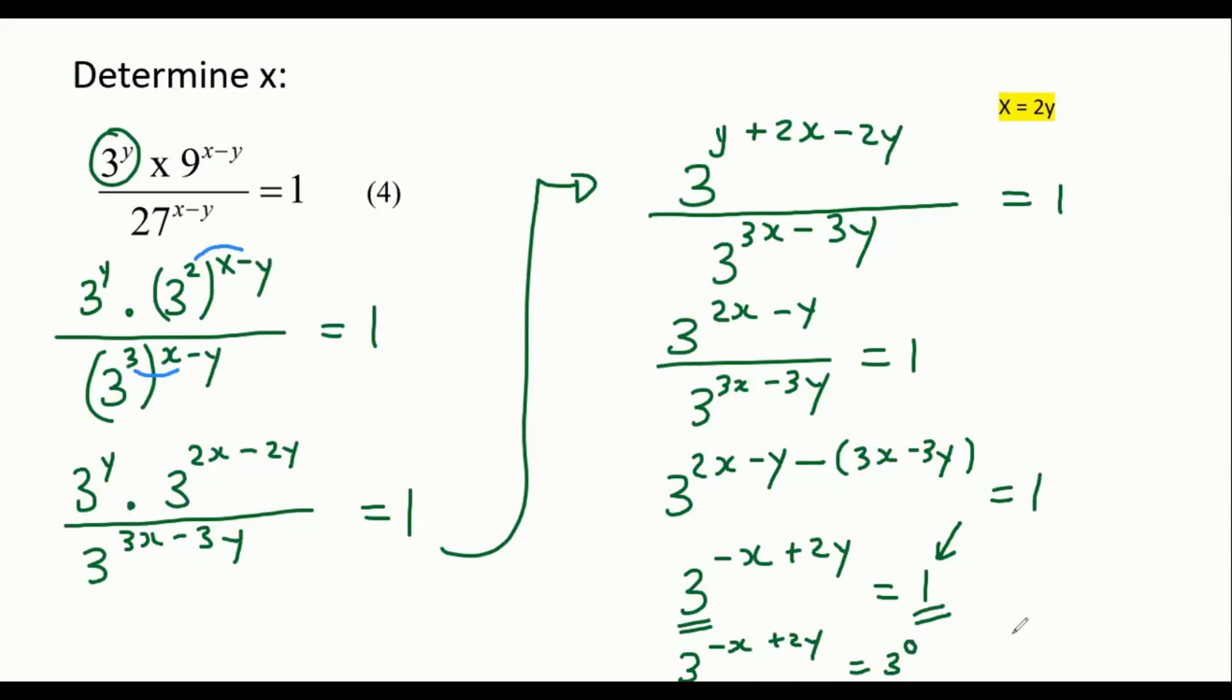And then what we can now do is we can cancel out the 3s because they are the same. And what we'll end up with is negative x plus 2y equals 0. And if you eventually solve this, you should end up with x equals 2y.